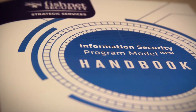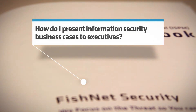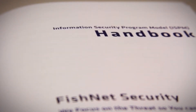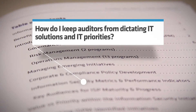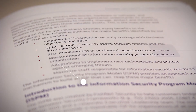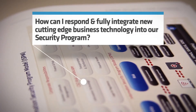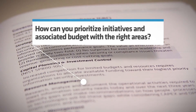The ISPM can help information security leaders to answer the following questions: How do I present information security business cases to executives? How do I keep auditors from dictating IT solutions and IT priorities? How can I stop being a victim of the next compliance standard? How can I respond and fully integrate new cutting-edge business technologies into our security program, such as cloud, social networking, mobile devices, and virtualization? And finally, how can you prioritize initiatives and associated budget with the right areas?